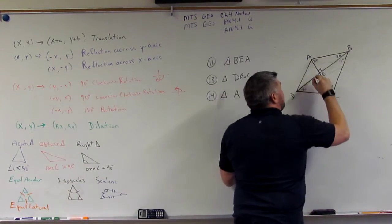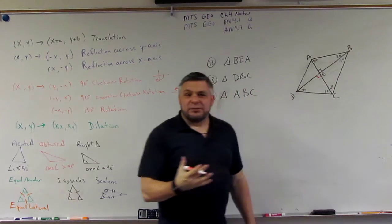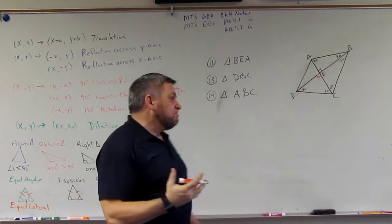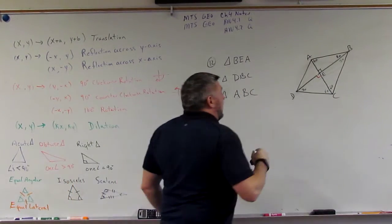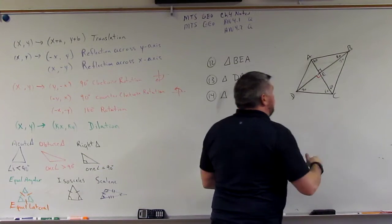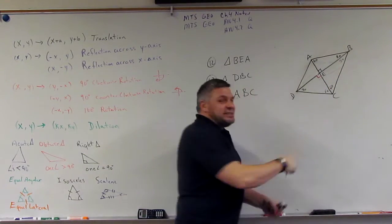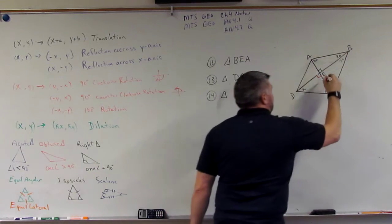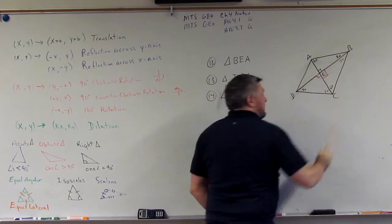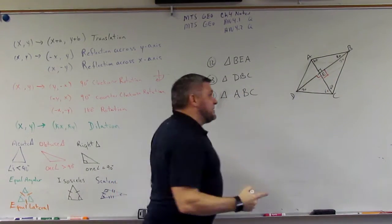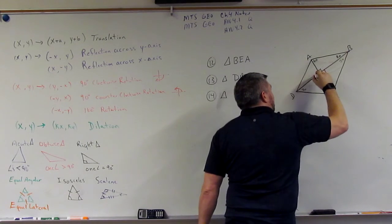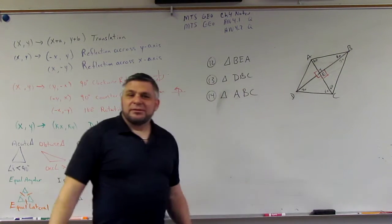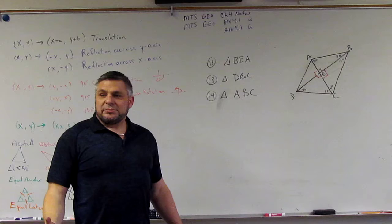Alright, so that means that this angle must be right. Does that make sense? Okay. Now, if this is 30 and this is 60 and it has to add up to be 180, that means this has to be right. Does that make sense? If this is right, then this has to be right. Does that make sense?